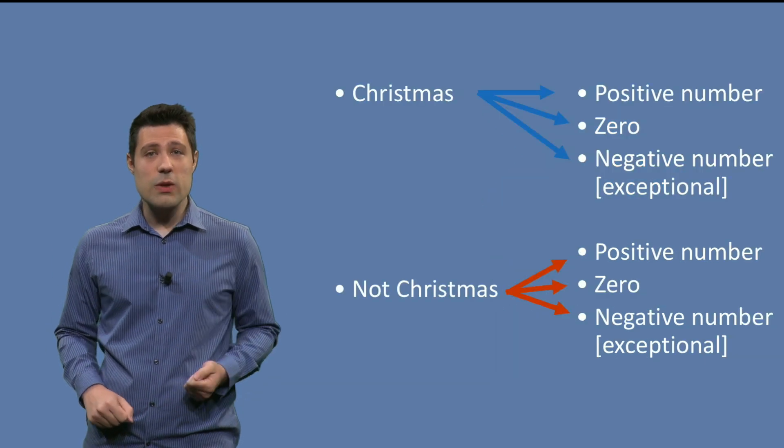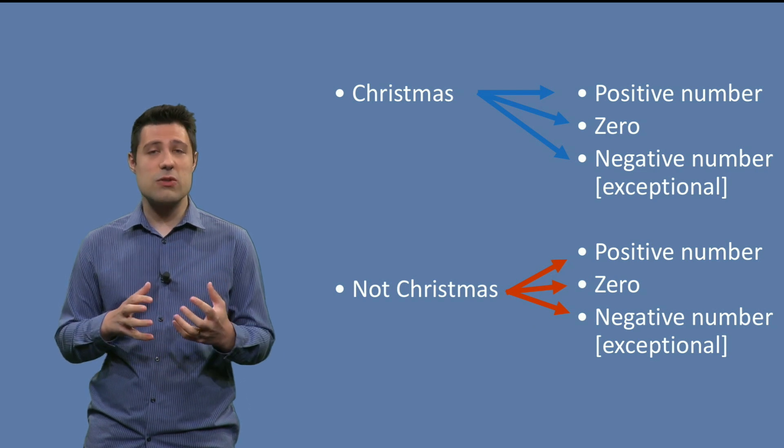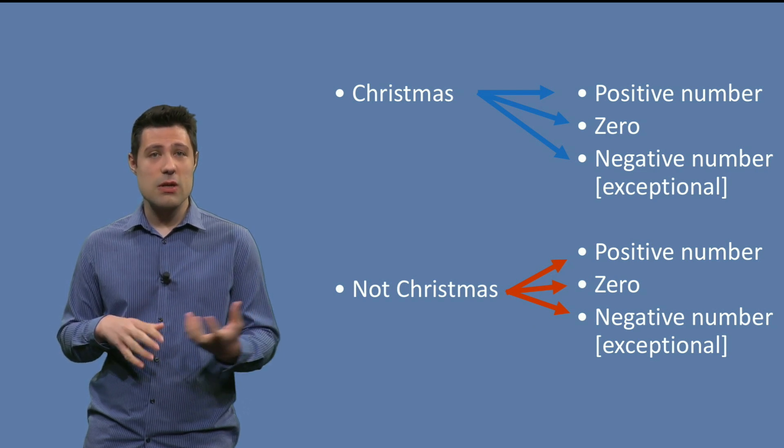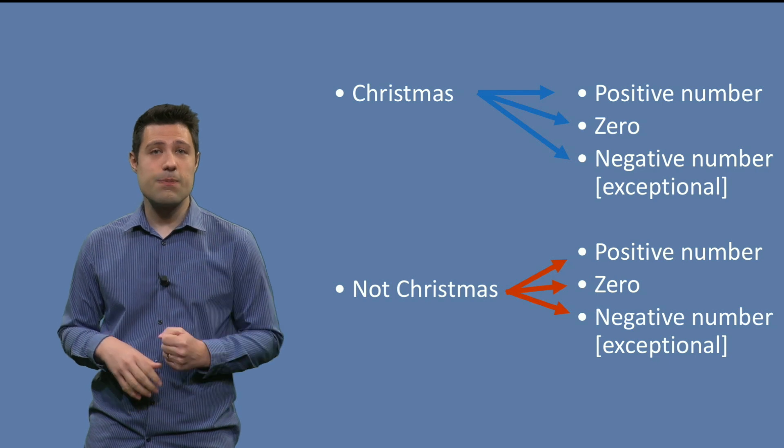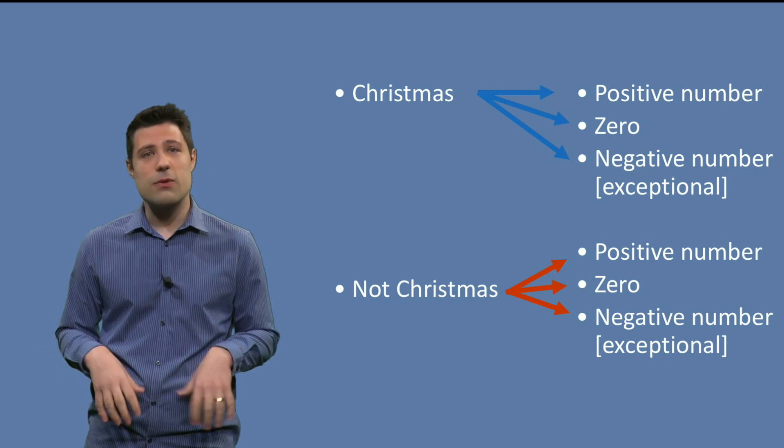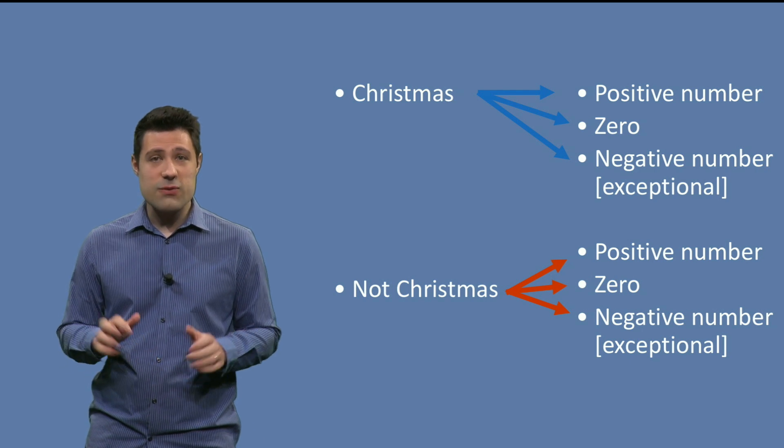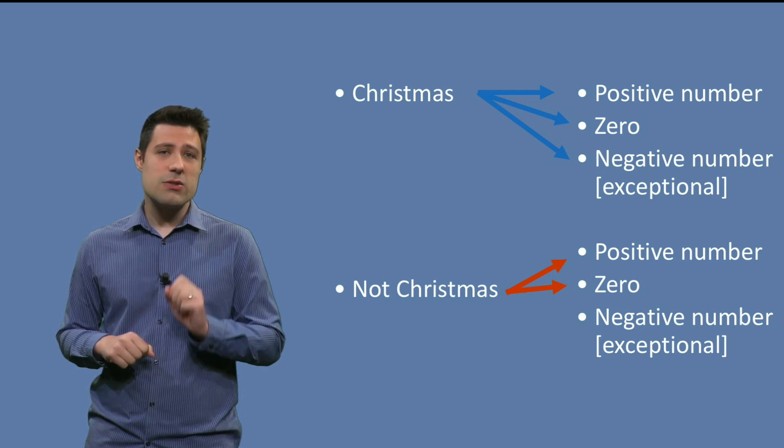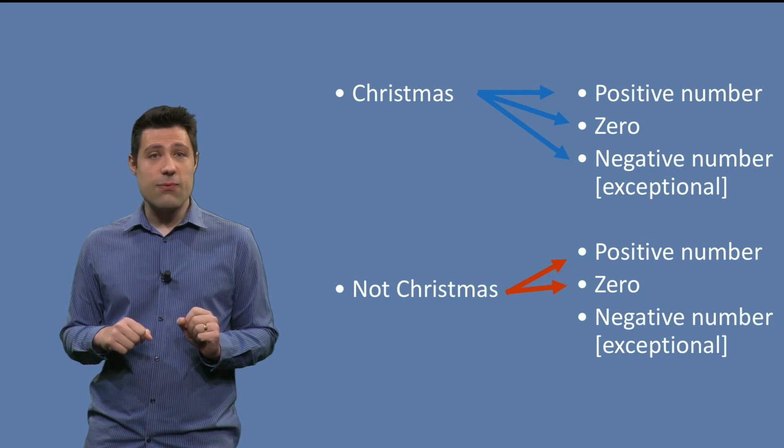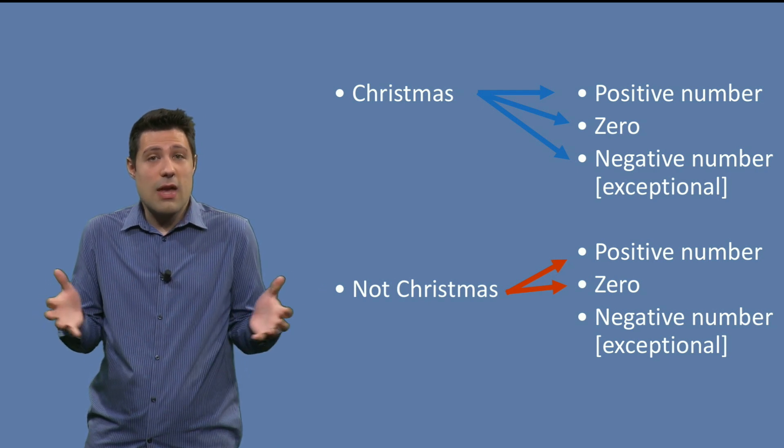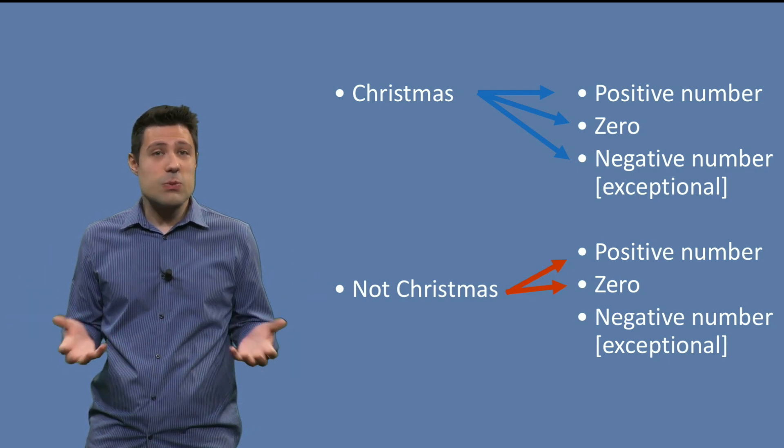Then what we do is we test all the possible combinations. So Christmas with positive number, Christmas with zero, Christmas with negative number, not Christmas with positive, not Christmas with zero, not Christmas with negative number. We have six combinations. This is still doable, but then imagine that if we have more variables and more characteristics, this number can explode.